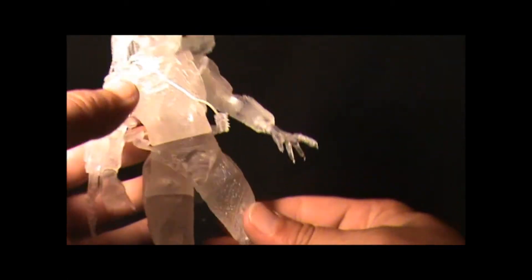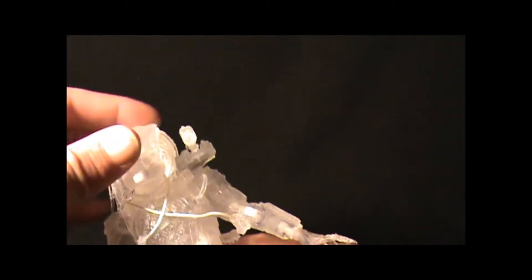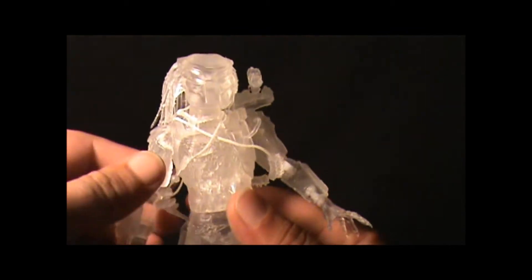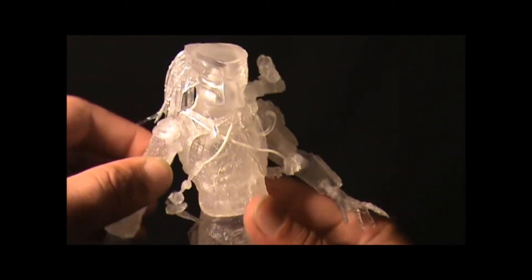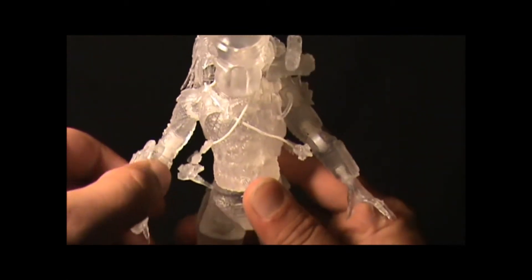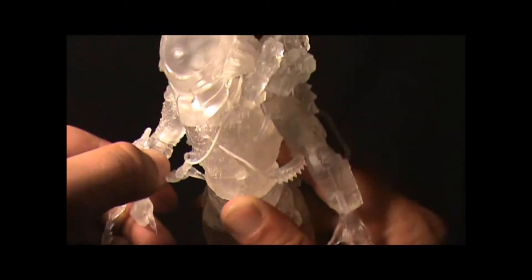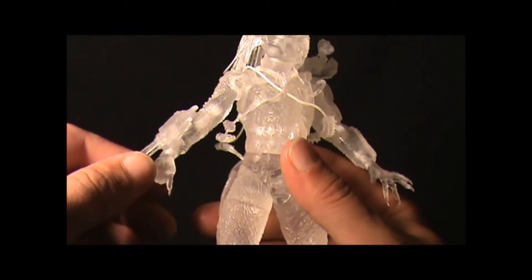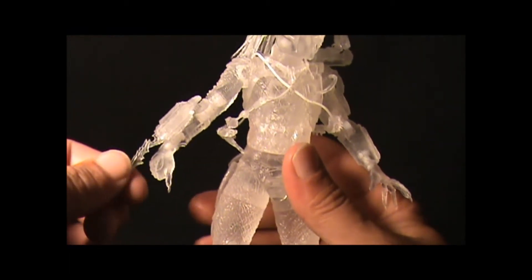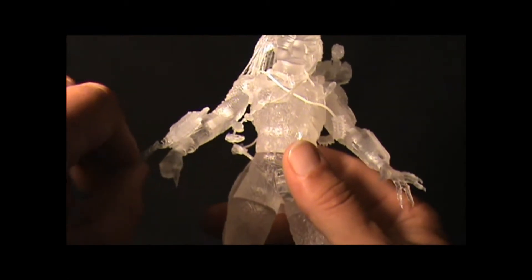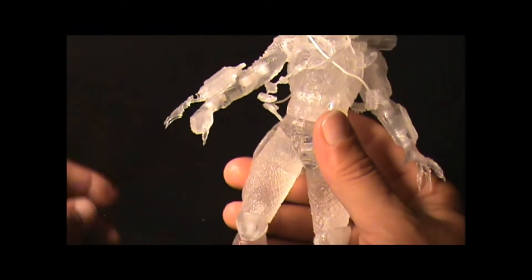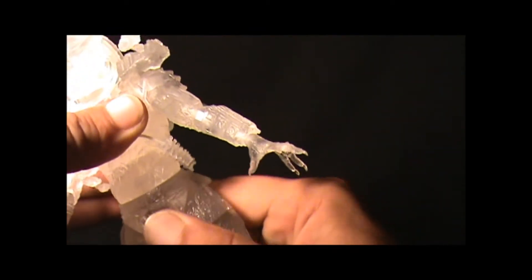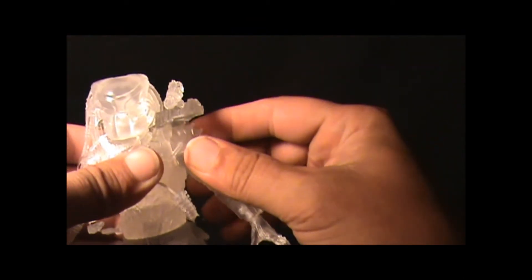Now as far as articulation goes, the head can probably do a 360. You got shoulder articulation, you got elbow, wrist. A good thing about these blades is that you can retract these blades, they come out. That's pretty cool. It's got hip rotation at the waist.